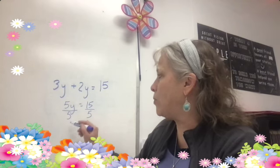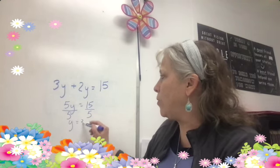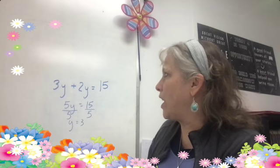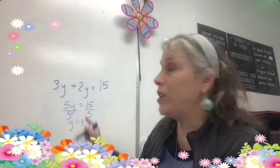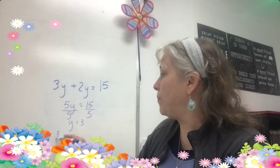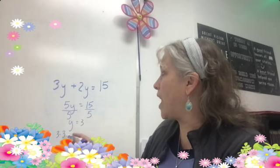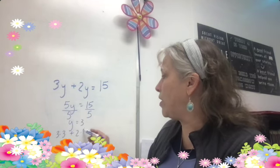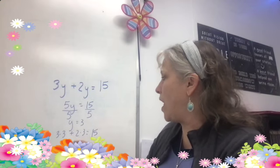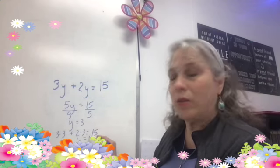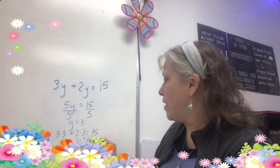Divide this side by 5 and I get 3. So, 1 times y is y equals 3. Don't forget, you have to check it. So, 3 times 3 is 9 plus 2 times 3 is 6. 9 plus 6 is equal to 15. So, there you go.